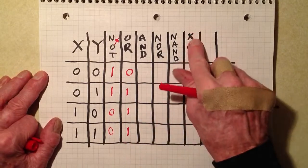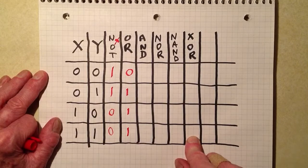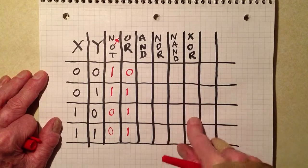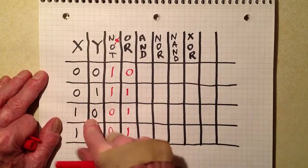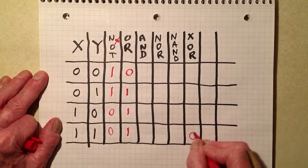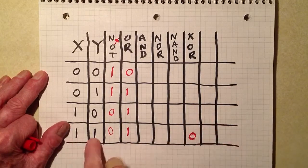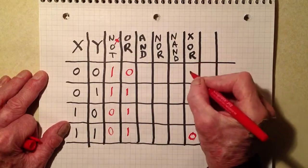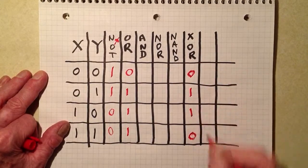We also have something called an exclusive OR. Now that is also known as either or. And in that case, the two input states must be different. One or the other, but not both. So it's like the inclusive OR, except when you have both inputs high, you get a low at the output. So the exclusive OR looks like that.